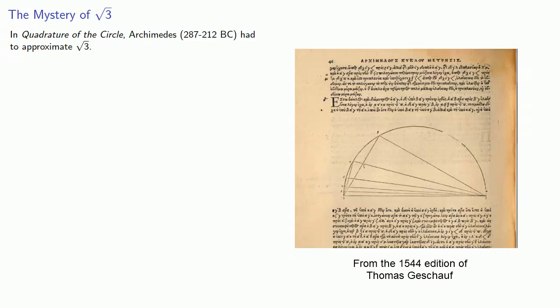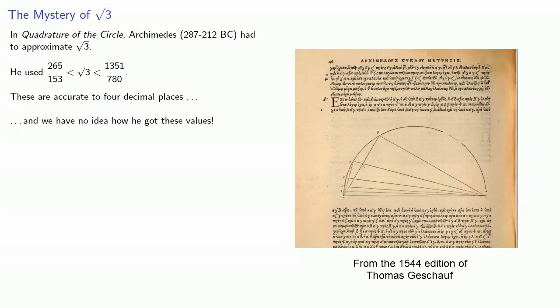He used 265/153 < √3 < 1351/780. It's worth noting these are accurate to four decimal places, and we have no idea how he got these values.